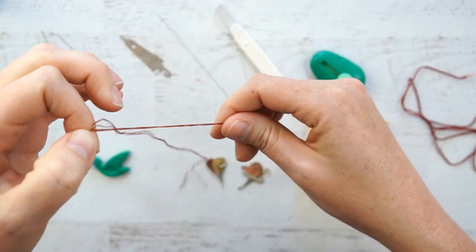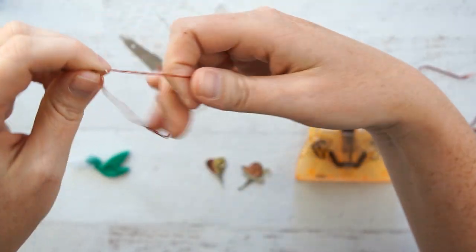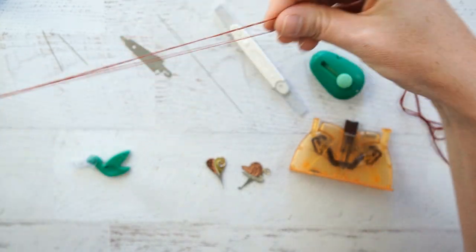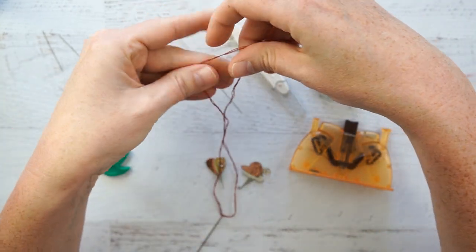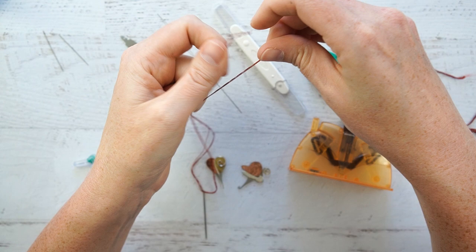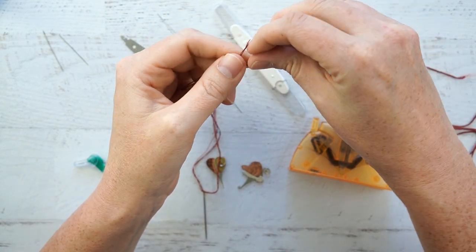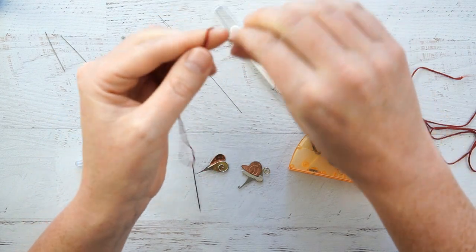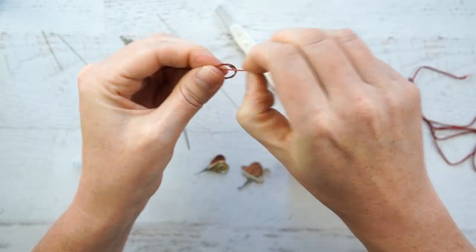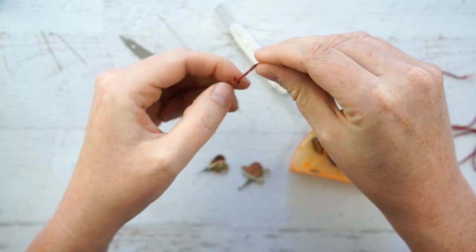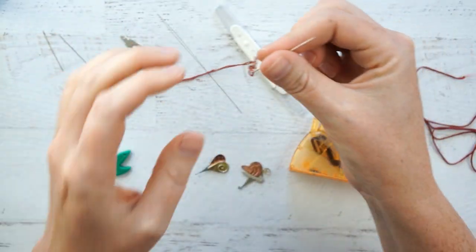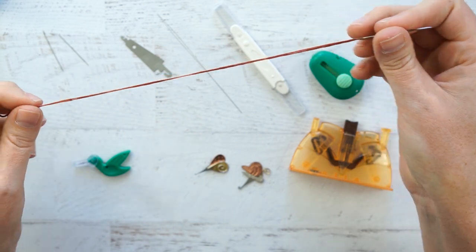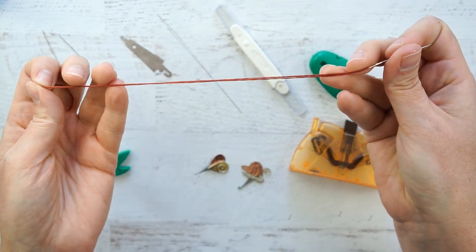And then what you would do is pull the strings all the way through until they're both even at the other side, and then you would—so you're doubling them up—and then you would tie a knot in the end down here. So you've only had to thread three strands through here, however you have six strands total.